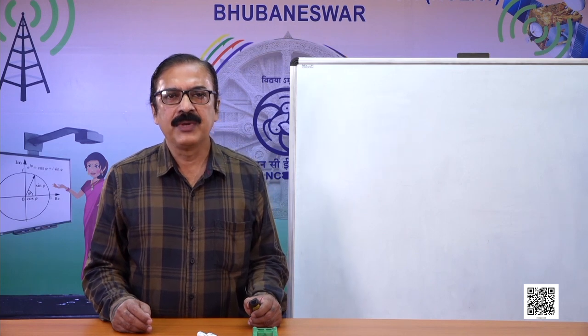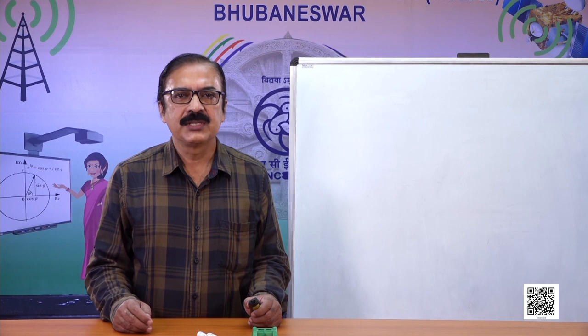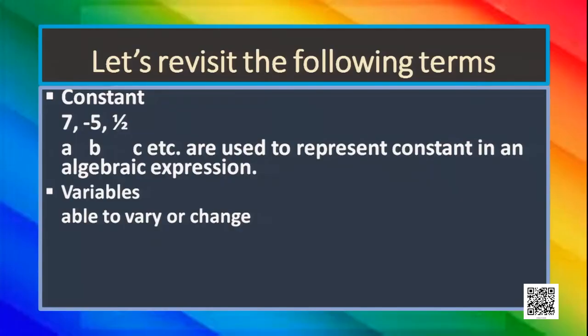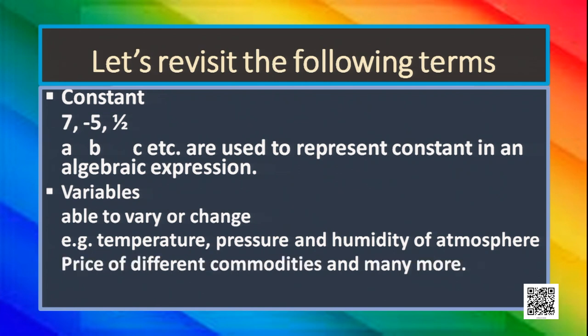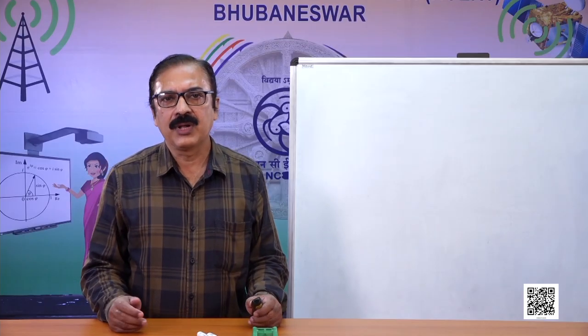And what is a variable? The variable means the value changes — which is able to vary or change. Let's see some examples, such as temperature, pressure, and humidity of atmosphere, or price of different commodities, and many more. So in our day-to-day life, we come across with various variables.